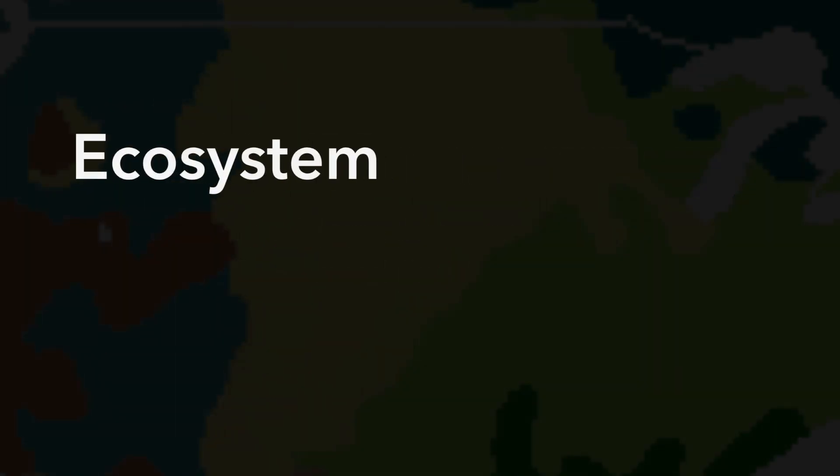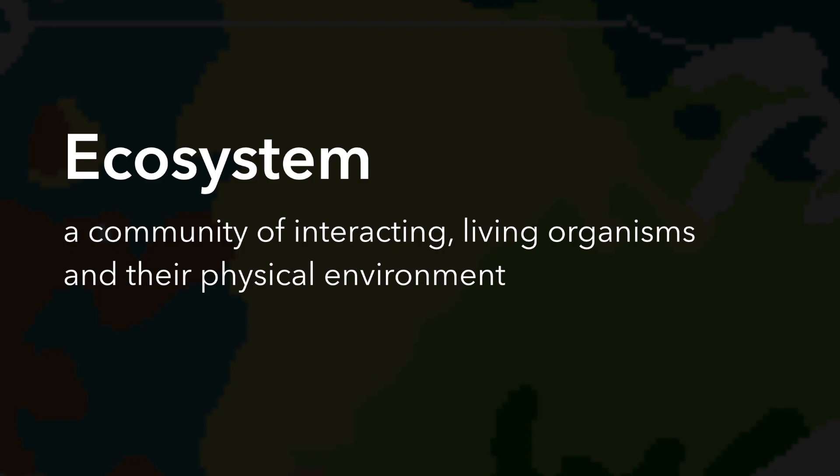An ecosystem is a little bit different from a habitat because the ecosystem looks at a community of interacting living organisms and their physical environment. So we're looking at the plants and the animals, but we're also looking at the physical environment around them, such as sun, lakes, rivers, oceans, rocks, anything else that's within their environment, even if it's not alive.